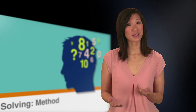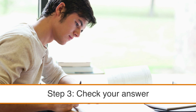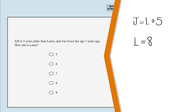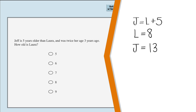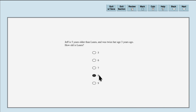We have an answer, but is it the correct one? Step three is to check our answer. Recall that we determined the value of l to be 8. If we substitute 8 for l in our first equation, we get j equals 8 plus 5, which is 13. We now have values for both l and j. Let's plug both of them into our simplified second equation: j equals l plus 5. We plug both in and see if we get a true statement. 13 equals 13 is a true statement, which means we solved the problem correctly. So the correct answer is 8, the fourth option.